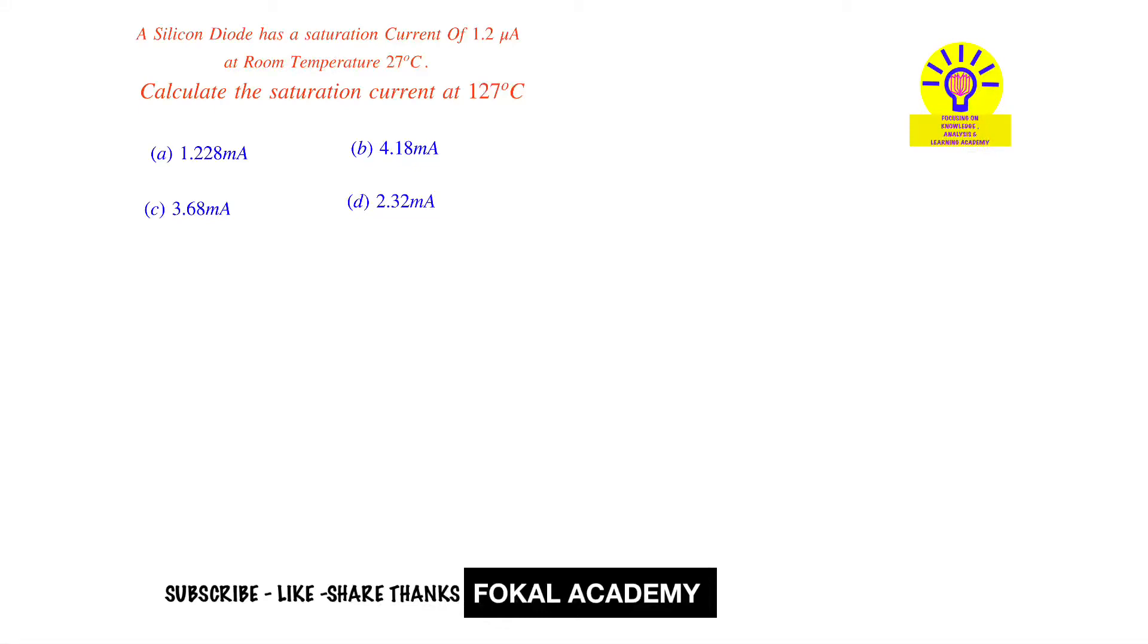In this problem, a silicon diode has a saturation current of 1.2 micro amperes at room temperature, 27 degrees centigrade. Calculate the saturation current at 127 degrees centigrade. First, what is the saturation current? It is the leakage current due to temperature.